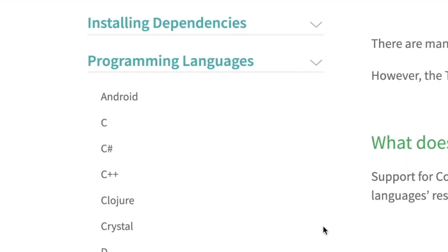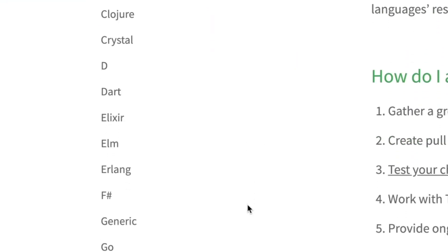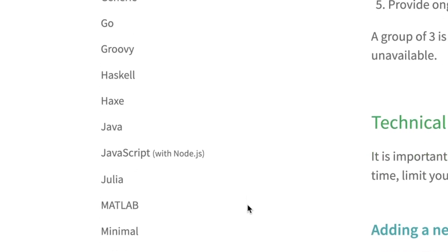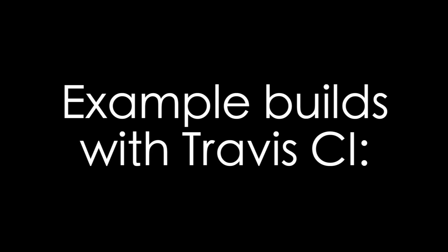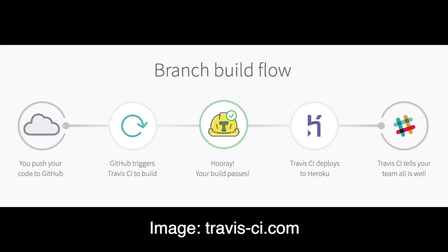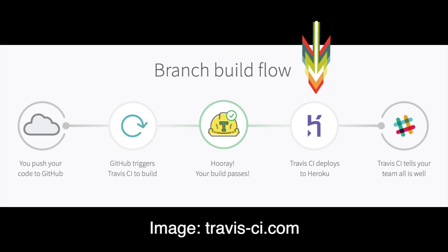It integrates seamlessly with GitHub — you literally just sign in with GitHub and you have access to Travis — and it supports a couple dozen programming languages like JavaScript with Node, Java, PHP, Python, C++, Ruby, and more. In this branch build flow, you start off by pushing your code to GitHub. GitHub then tells Travis CI to start building. Once your build passes the tests, your code gets deployed — in this case Heroku, but Travis gives you a couple dozen deployment options to choose from.